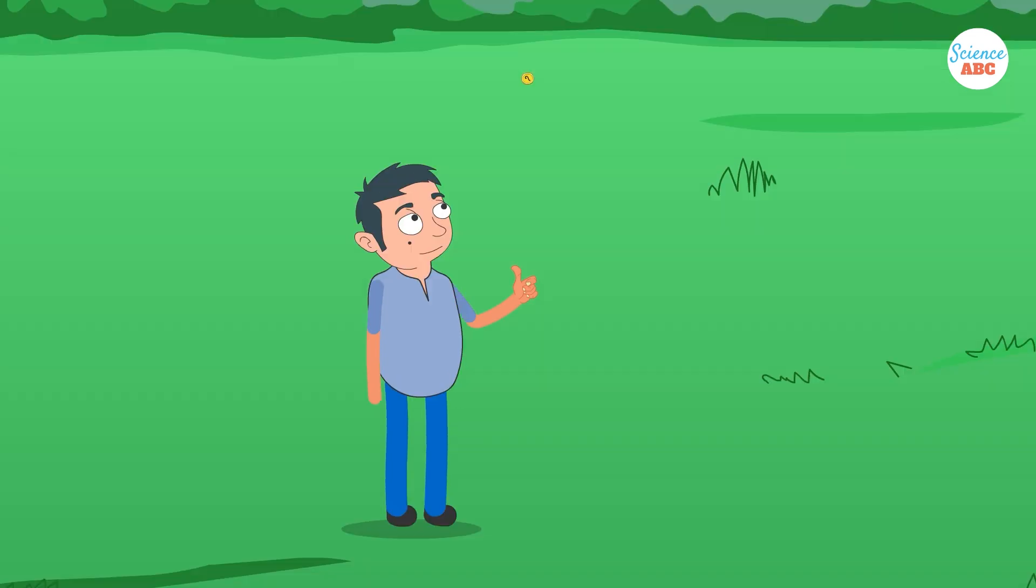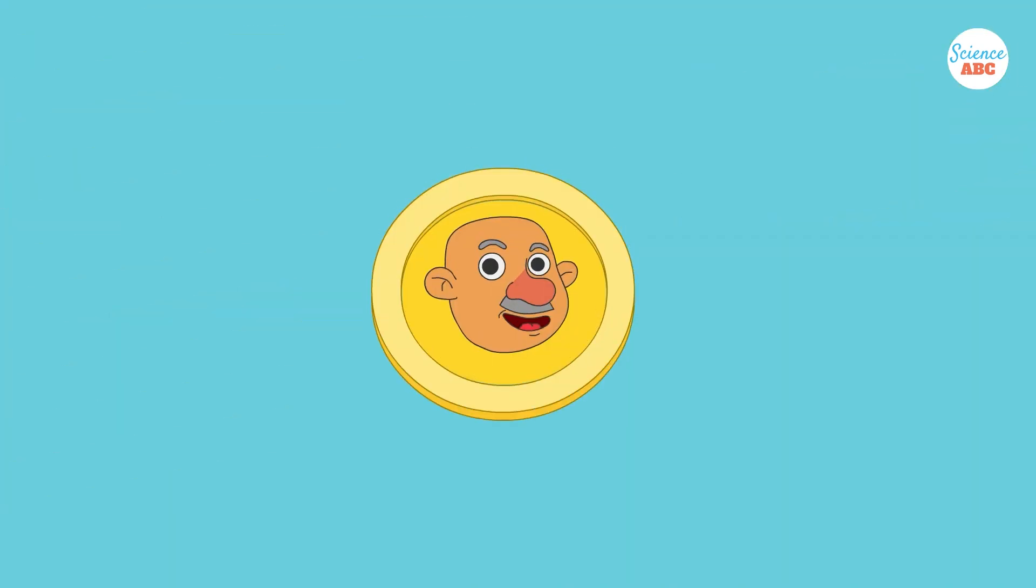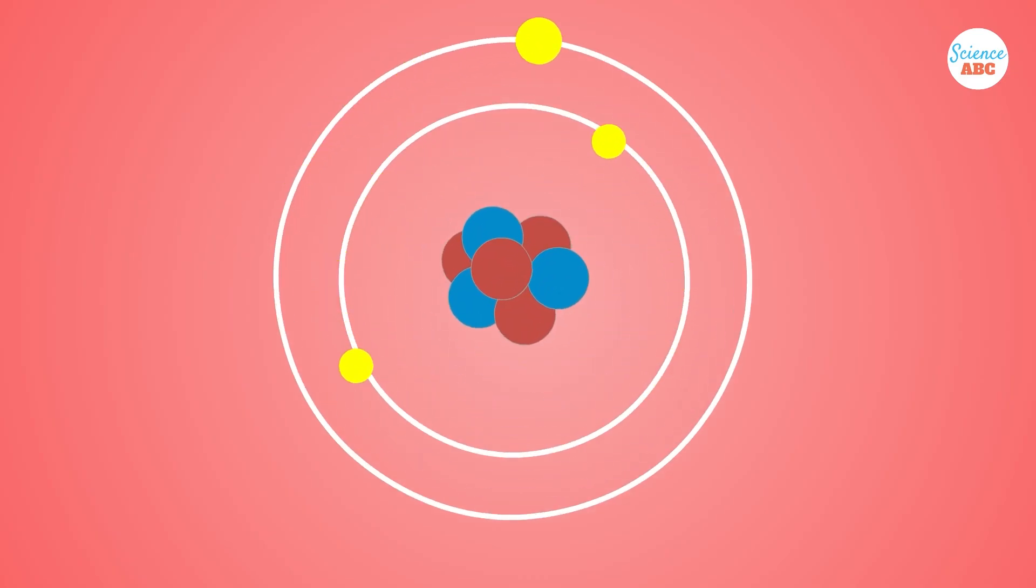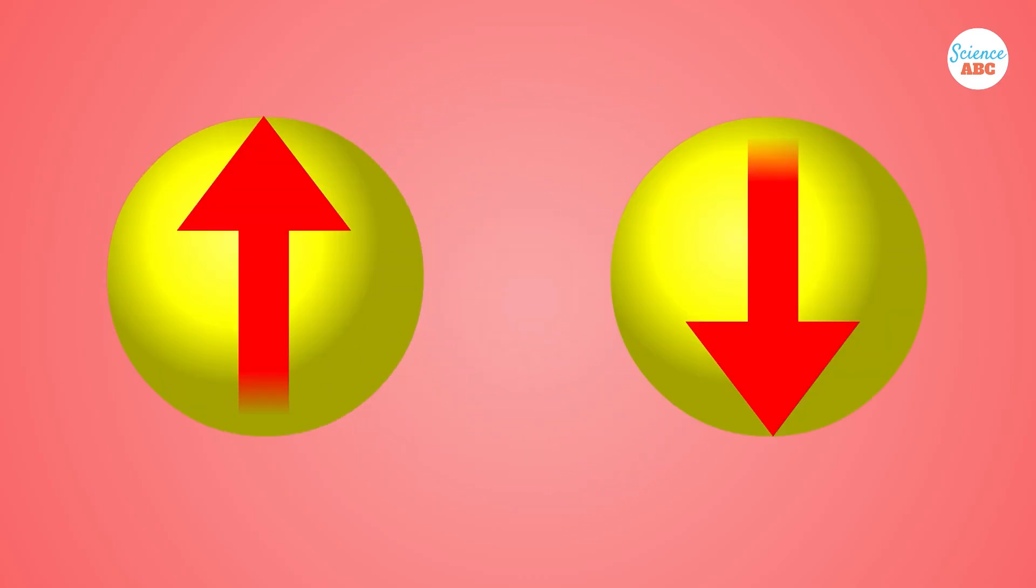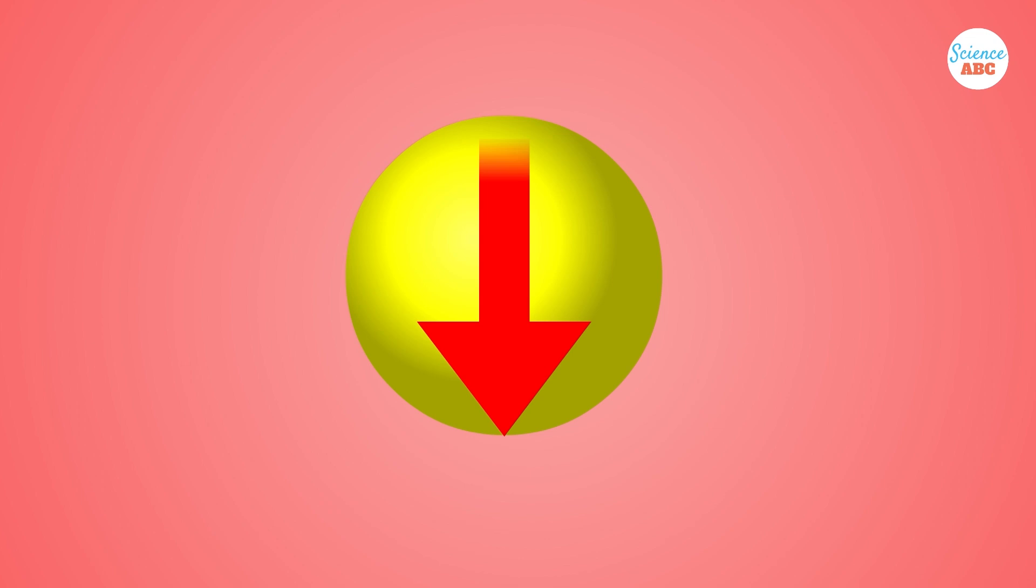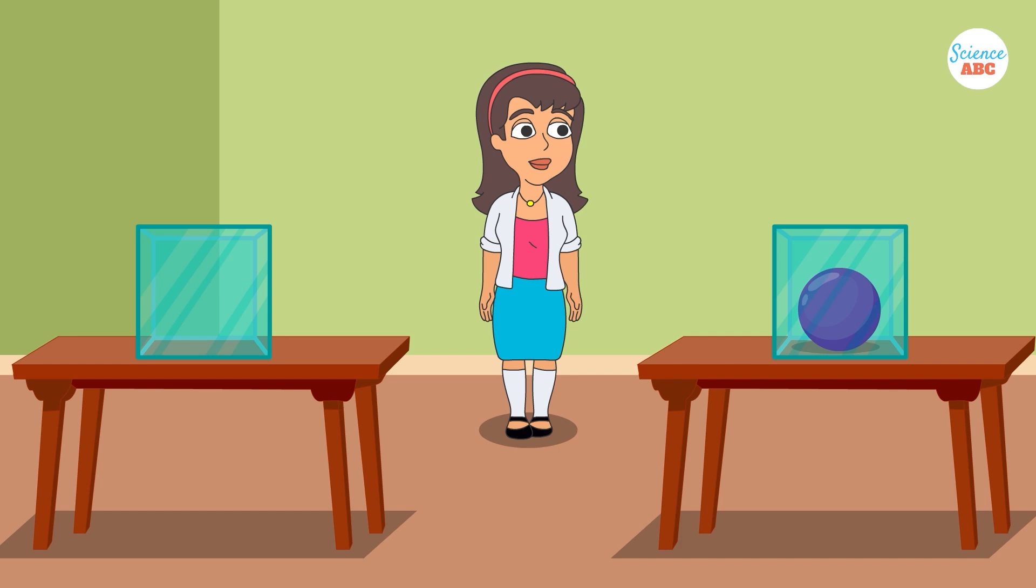Imagine a coin spinning in the air. Until it lands, it's not just heads or tails, it's both at once. Similarly, a subatomic particle could be in two places at once, or have both an up-and-down spin, until a measurement forces it into one state. This introduces the fascinating idea of objects existing in seemingly contradictory states.